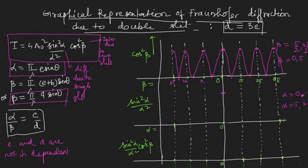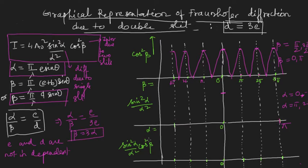At α = 0 I will get the primary maximum, but the point α = π corresponds to β = 3π because I have taken d = 3e. From the relation α/β = e/3e, we get β = 3α, or equivalently α = β/3. So whenever β = 3π, my α will be π. At α = π I get a minimum of the diffraction pattern, so this point falls exactly at β = 3π.